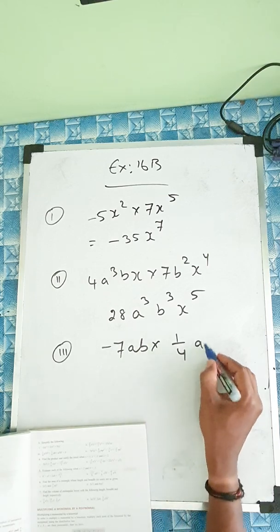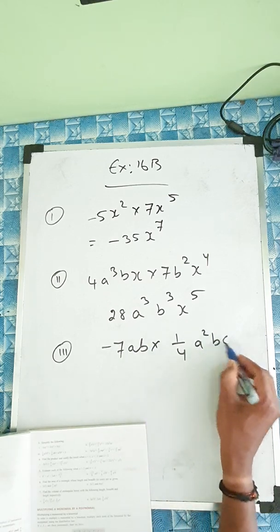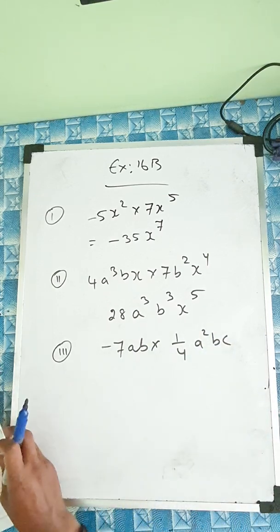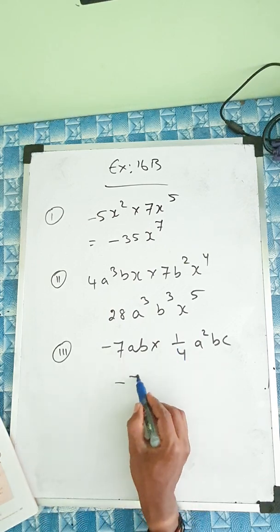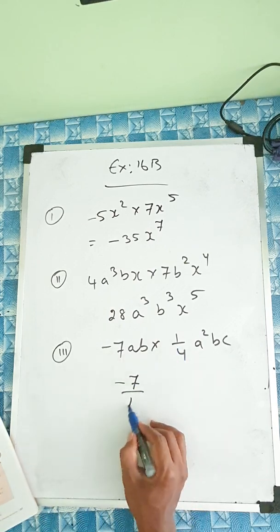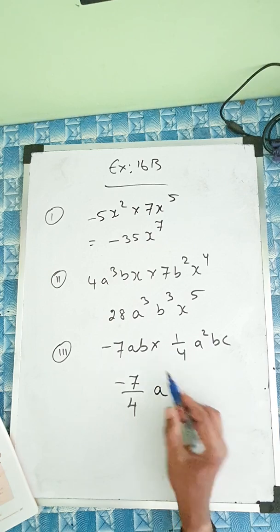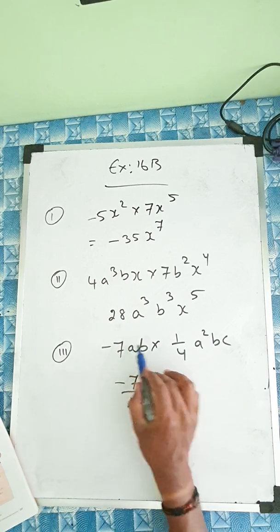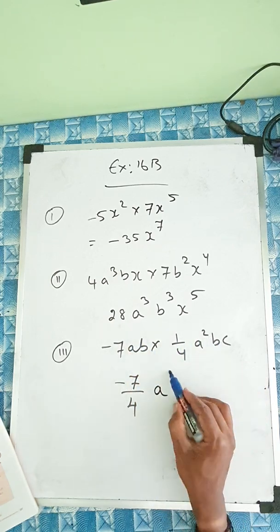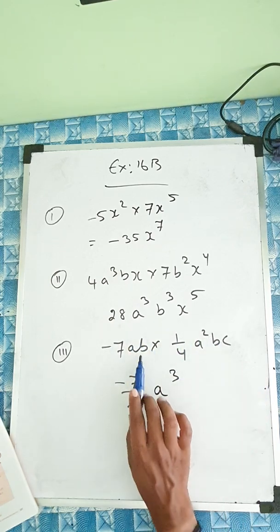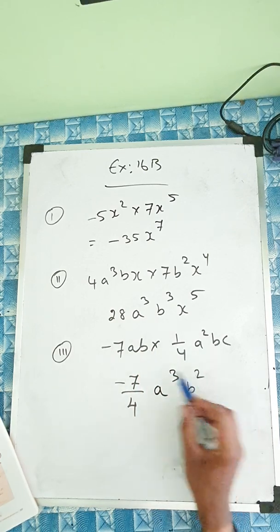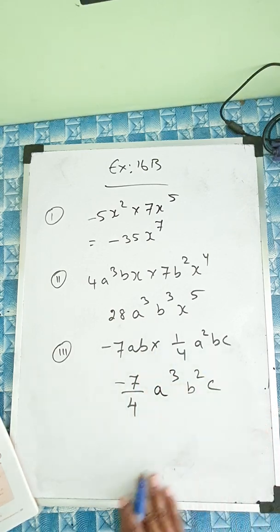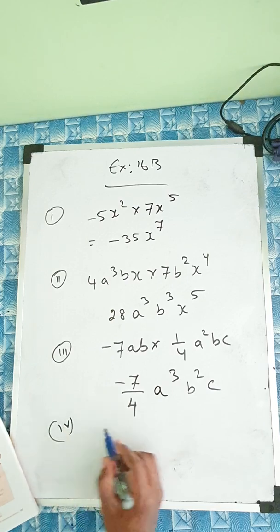Question number 3: minus 7ab into 1/4 a squared bc. Here also the same: 7 times 1 is 7, divided by 4 — we write the same. For a: power 1 here and 2 here, so 1 plus 2 is 3. For b: 1 here and 1 here, so 1 plus 1 is 2. And c only has power 1, so we just write it the same.